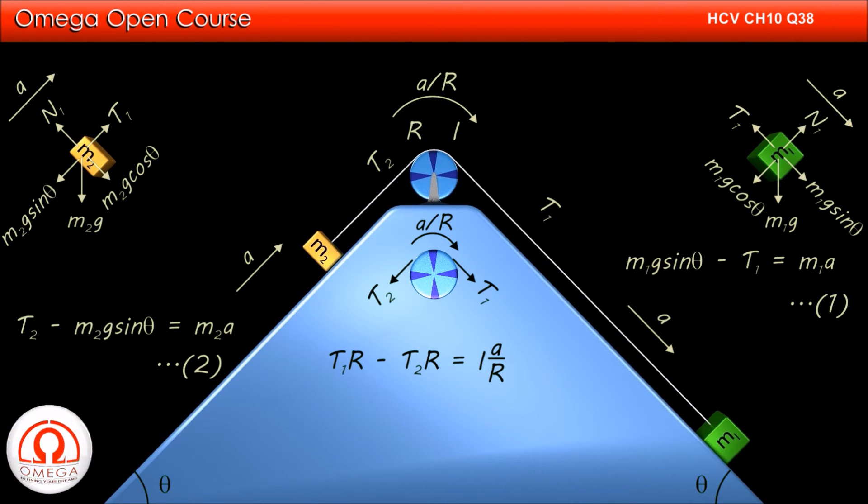Since the radius of the pulley is R, torque due to T1 about the axis of pulley is T1 into R in clockwise direction while the torque due to T2 is T2 into R in anticlockwise direction. Thus the net torque is T1 into R minus T2 into R in clockwise direction which must be equal to I into A by R.